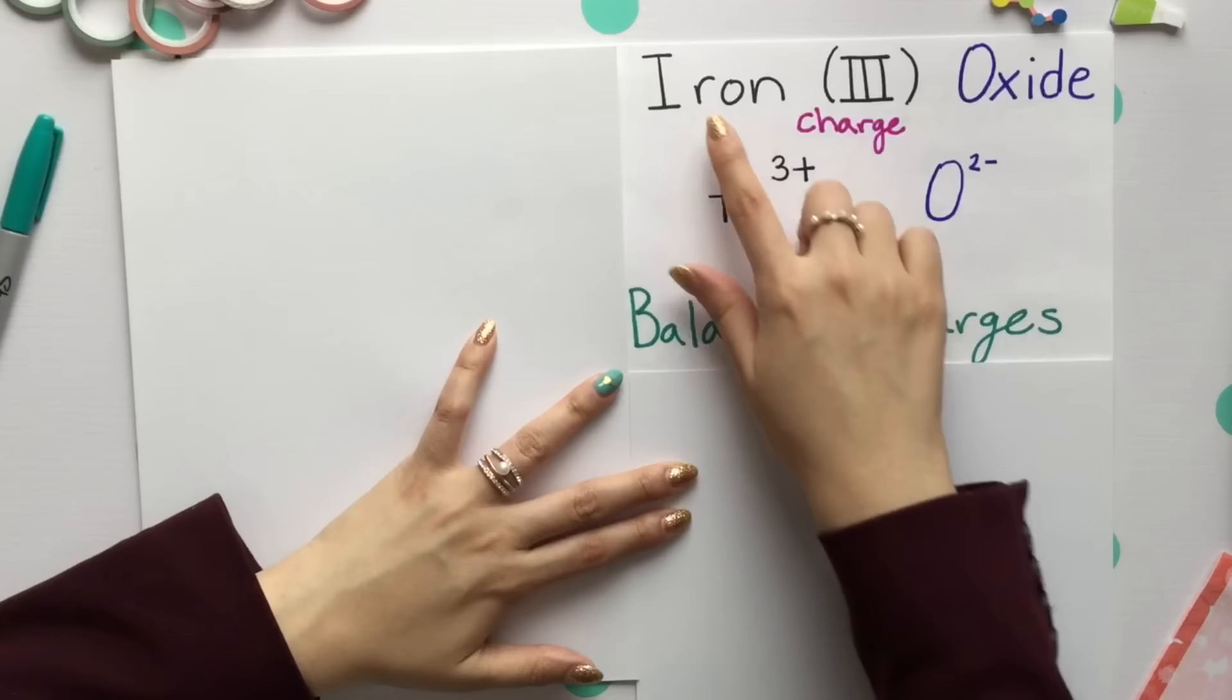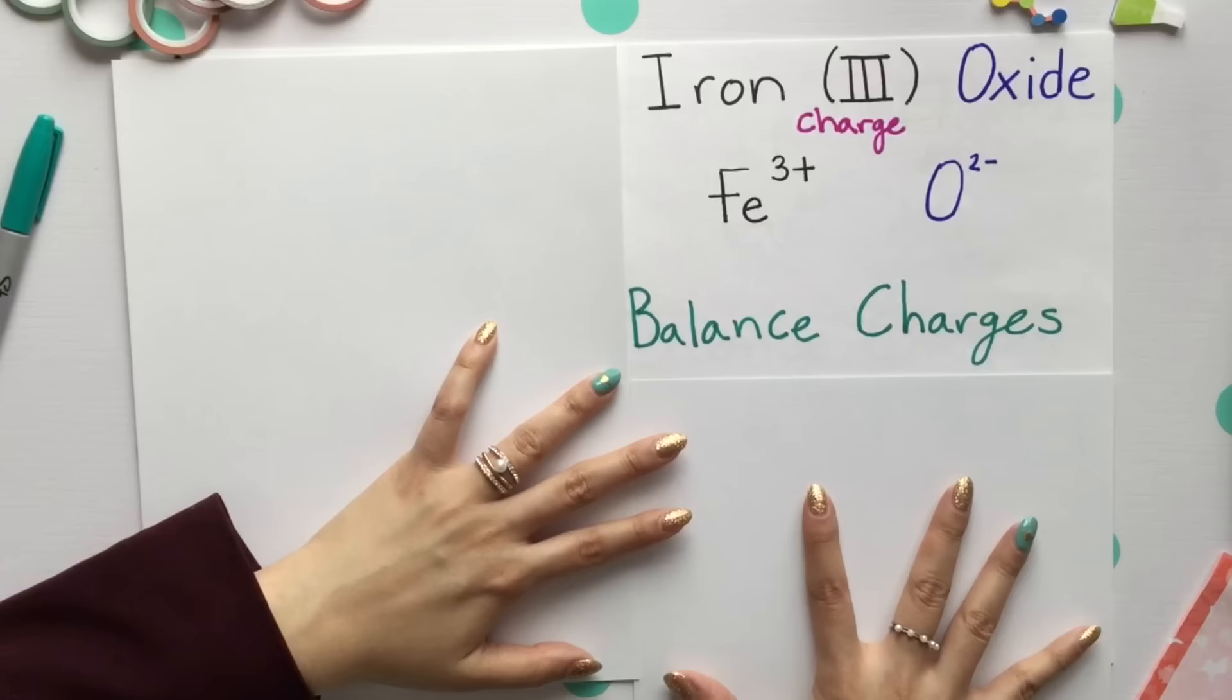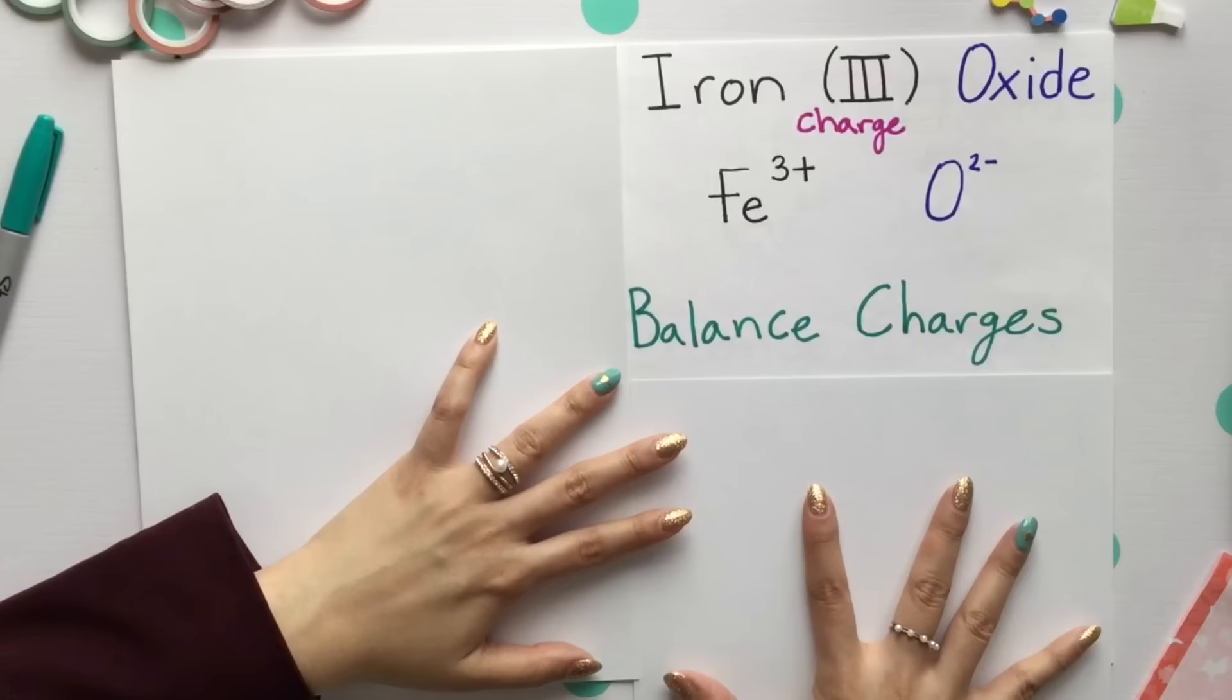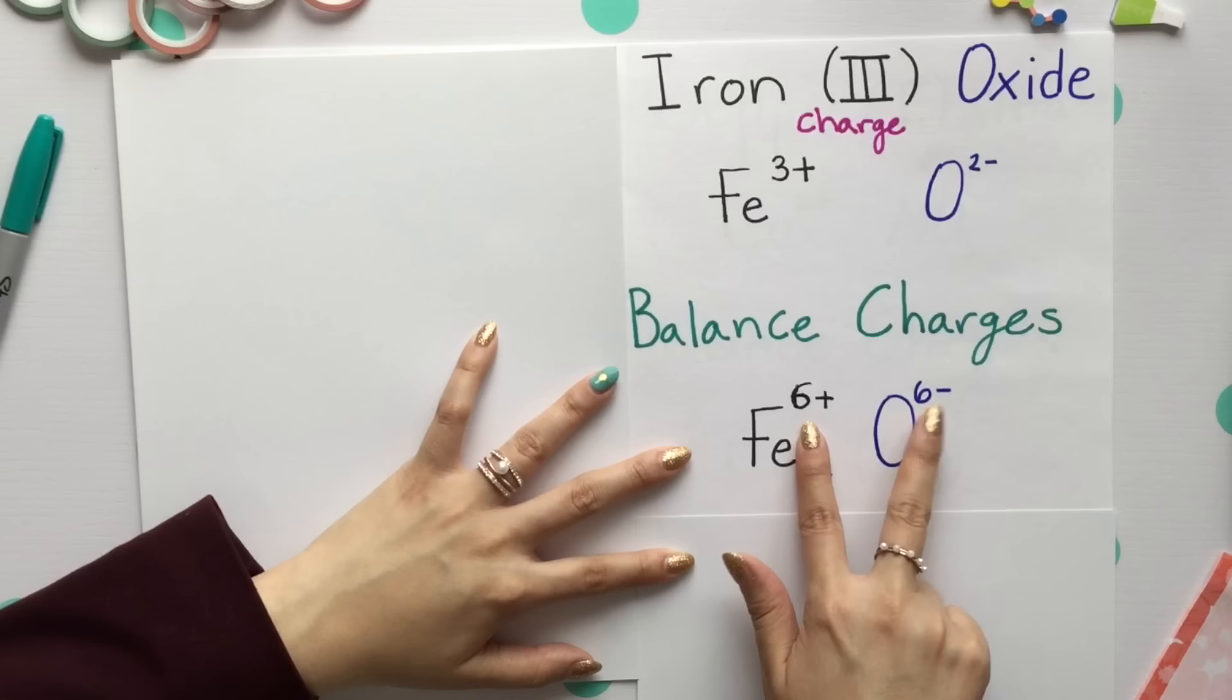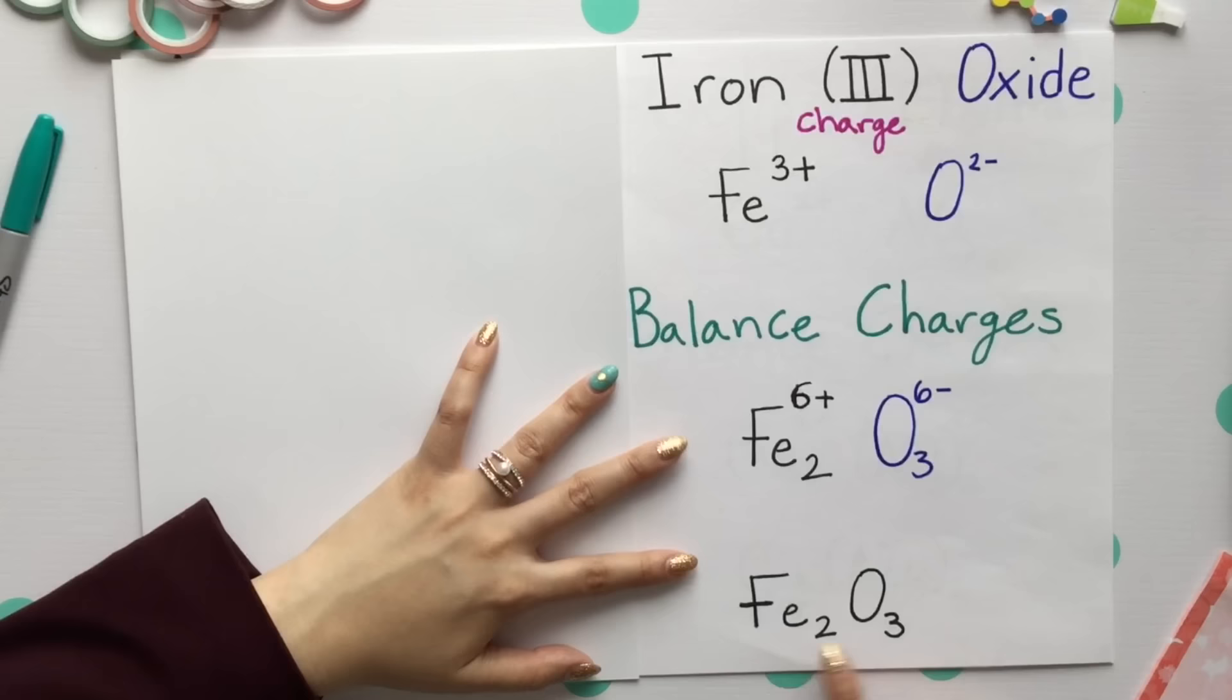We need to balance out our charges. Your iron was a 3+ charge, your oxygen was a 2- charge. Balancing out these charges, we'll place a 2 subscript for iron and a 3 subscript for oxygen. We now have these 6s canceling out. Your final compound is Fe2O3.